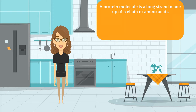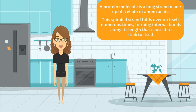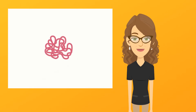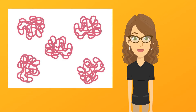A protein molecule is a long strand made up of a chain of amino acids. This spiraled strand folds over on itself numerous times, forming internal bonds along its length that cause it to stick to itself. The result is a molecule shaped like a wad of coils. Imagine an old-fashioned phone cord that's in a bit of a tangle. Because of its shape, it keeps to itself even though it's surrounded by other protein molecules of its kind.